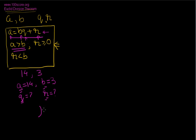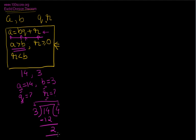Let's start dividing: 14 comes inside, 3 goes outside. 3 times 4 is 12. Subtract 12 from 14 to get a remainder of 2. As per the theorem, R has to be less than B — since 2 is less than 3, we stop the division here. So our quotient is 4 and our remainder is 2. Let's put these numbers into our equation.